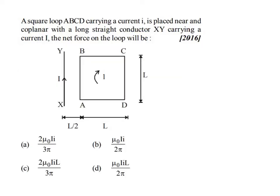The next problem: a square loop ABCD carrying a current I is placed near and coplanar with a long straight conductor XY carrying a current I. The net force on the loop will be? Current flows through the straight conductor and around the square loop.